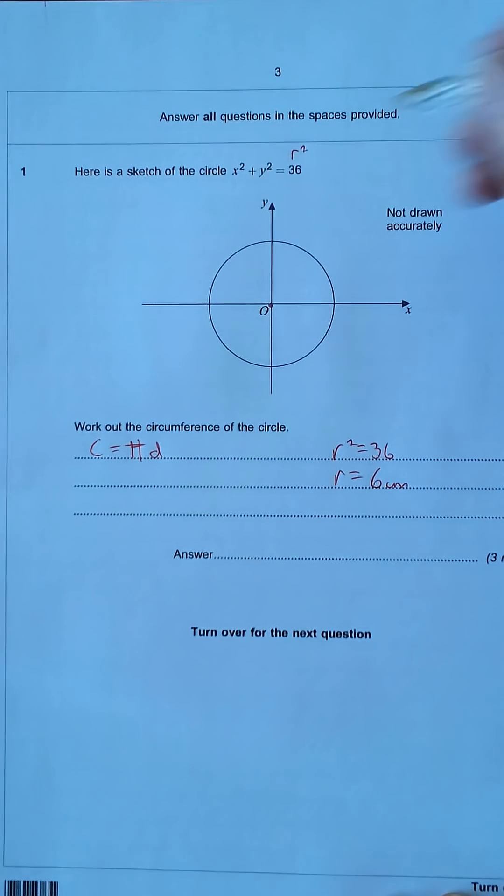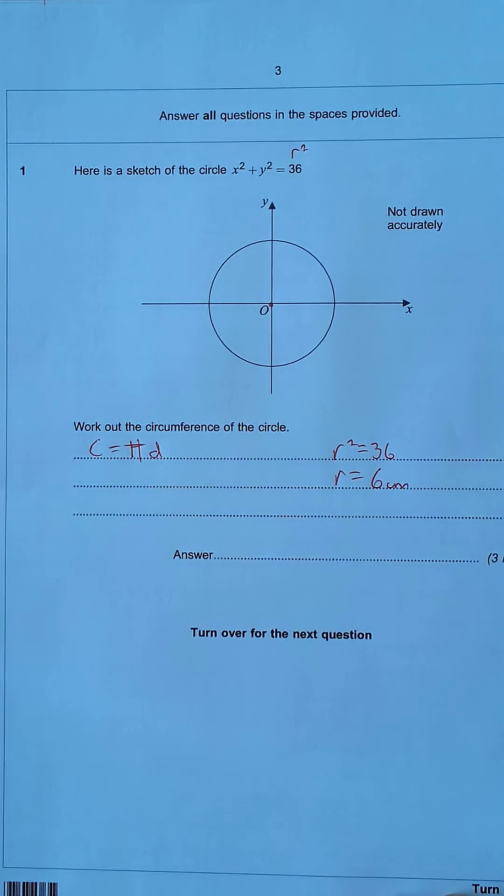Now we'll fit this into the formula over here. The radius is 6 centimetres, so that means the diameter equals 12 centimetres.